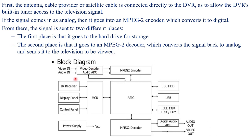Looking at the block diagram, there is a control unit where the IR receiver, display panels, and control panels are connected. More importantly, the video and audio input is given to the video decoder. If it is in analog form, it is converted into digital and then given to the MPEG-2 encoder. It is stored on the storage device, and whenever required it is decoded with the MPEG-2 decoder to produce audio and video output through the digital audio amplifier.